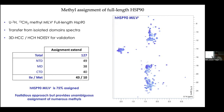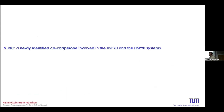This approach is definitely not the fastest — it took about a year and a half to get the full assignment. But it's a very safe approach because it's through-bond and validated through space. As a bonus, we also get the assignment of the isolated domains that we can use afterwards.